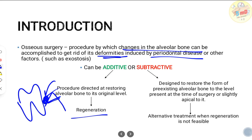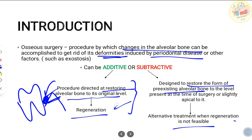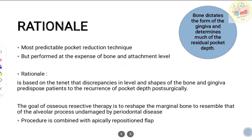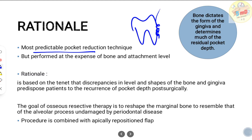In what cases do we go for resection, and why? Resection is aimed at situations where regeneration is not possible. A procedure directed at restoring bone to its original level is termed regeneration. In this video we will see about the subtractive, or resective, osseous surgery procedure. The rationale is that it is the most predictable pocket reduction technique. Bone dictates the form of gingiva and determines much of the residual pocket depth.